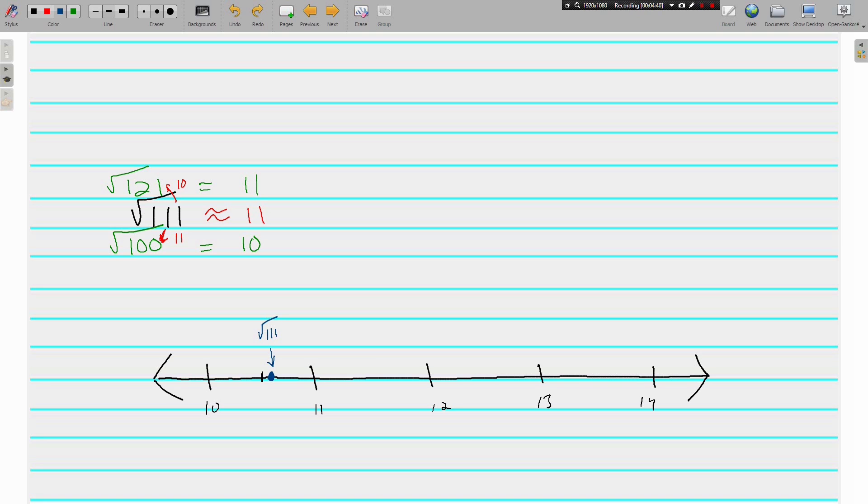See how that works? That's pretty much it. Use the perfect squares that are just below and just above the one that you're looking for, and when you graph it on a number line, just make sure you get it between the right numbers. Is it way closer to 11 than to 10, or is it more toward the middle?